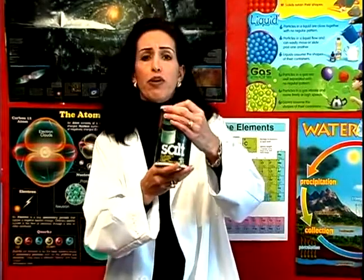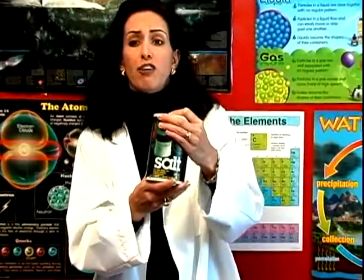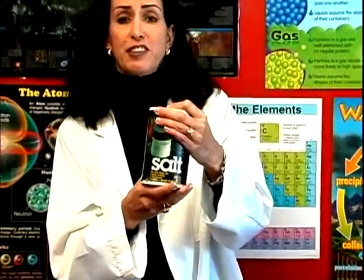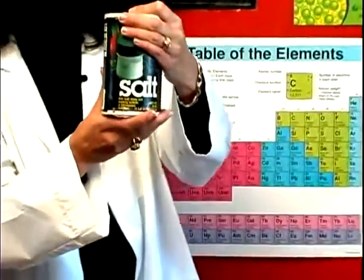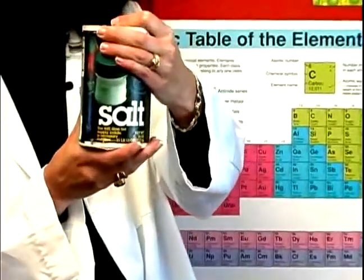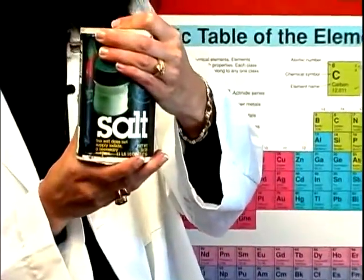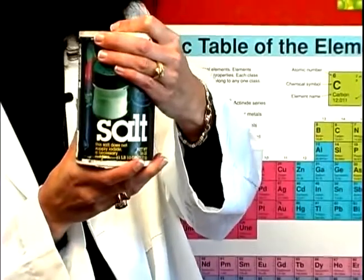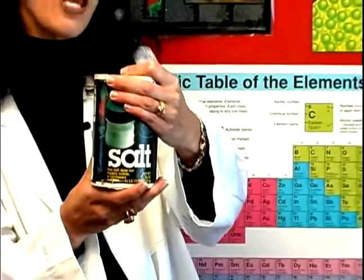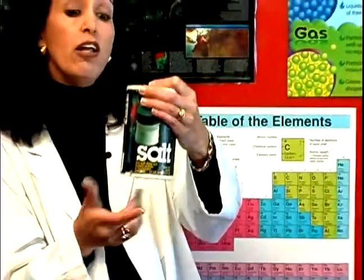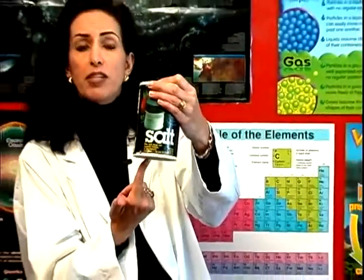But let's take something ordinary, like salt, for instance. All you need to do is take one part sodium and one part chloride, and you come up with NaCl — that's common table salt.